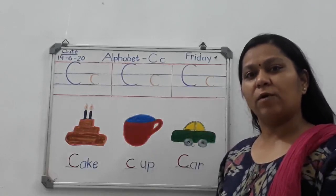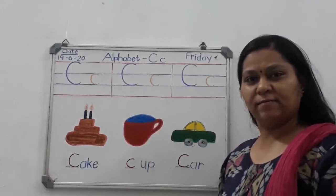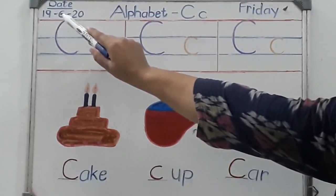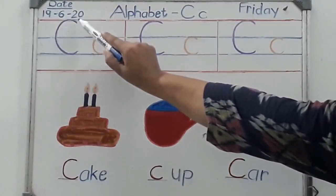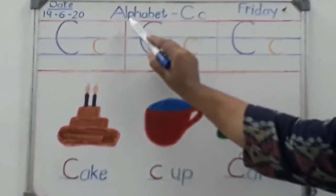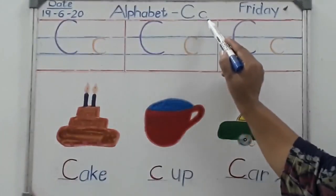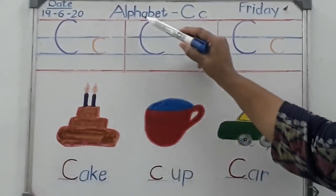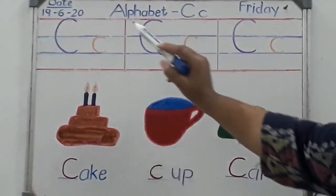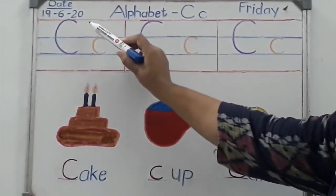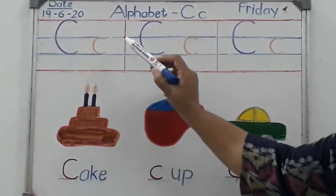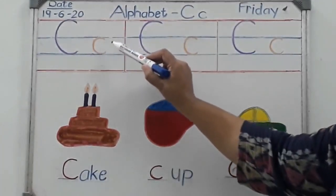Today children we will learn alphabet C from this bowl. Here is today's date: 2019-6-2020, and day Friday. Heading of alphabet C — capital C and small c. Here are two red lines and two blue lines. We will write capital C from the first red line to the second blue line, and we will write small c between the two blue lines.